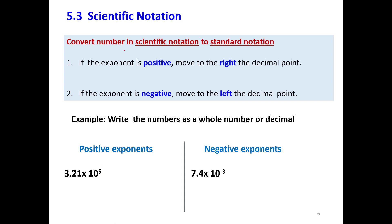Let's check these numbers. We want to write them as whole numbers or decimal numbers. We have 3.21 times 10 to the power 5. The exponent is positive, so we move to the right 5 places: 1, 2, 3, 4, 5. The final answer is 321,000. This is how we convert a number in scientific notation into standard notation.